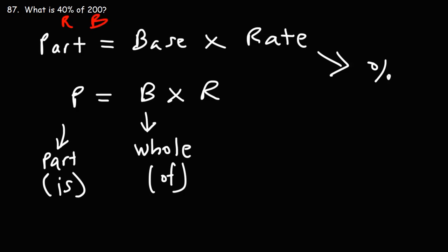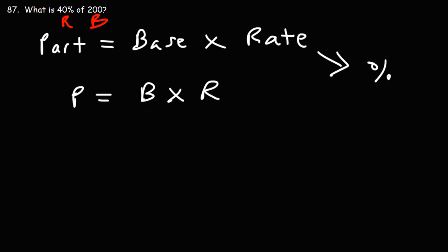So we're looking for the part in this problem. So we want to calculate P. So P is equal to the base. The base is 200 times the rate. 40%, you want to convert that to a decimal.